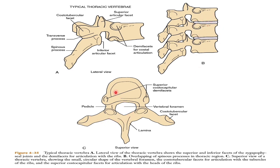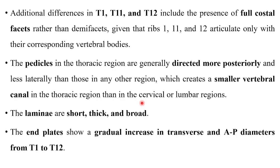This is the superior view of a typical thoracic vertebrae. Additional differences in T1, T11, and T12 include the presence of full costal facets rather than demi facets, given that ribs 1, 11, and 12 articulate only with their corresponding vertebral bodies.